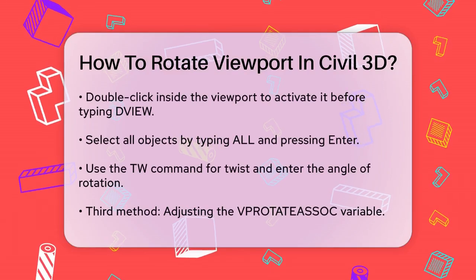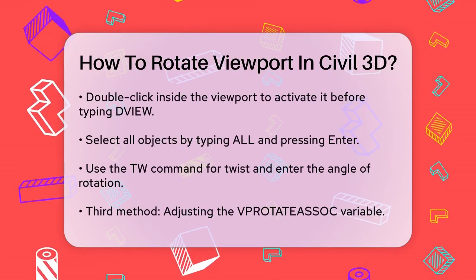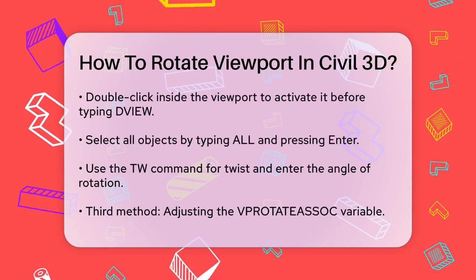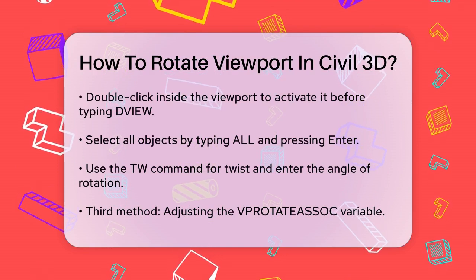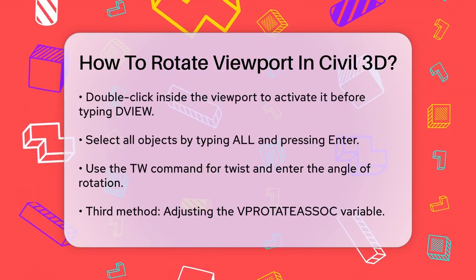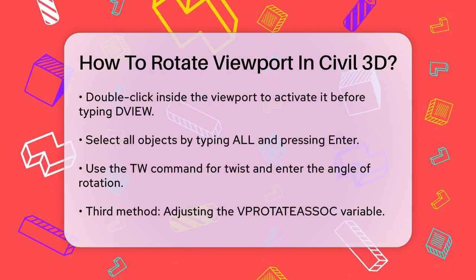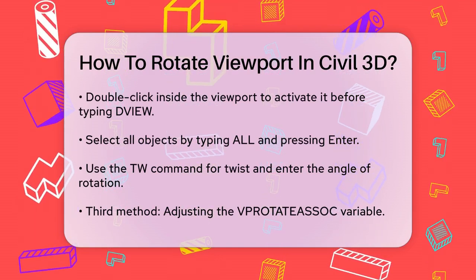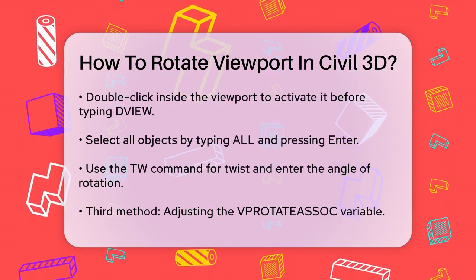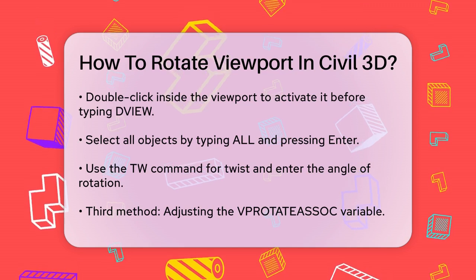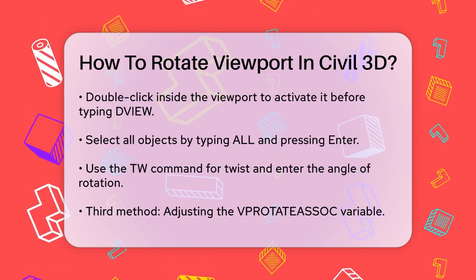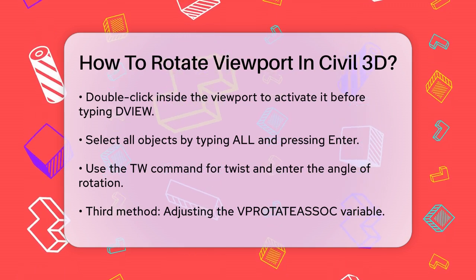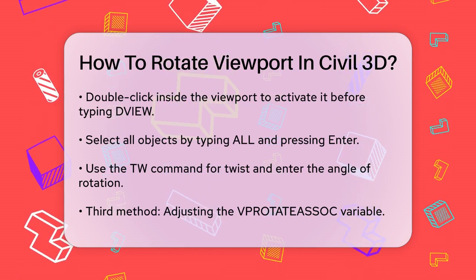Next, you'll be asked what you want to do, and here you should type TW for Twist and press Enter. Now enter the angle of rotation you need, and the viewport will be rotated accordingly without affecting the model space.